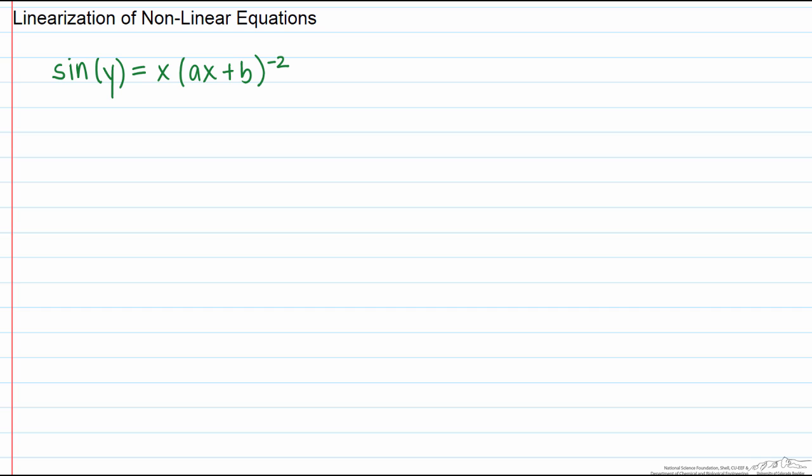Here we want to find a and b. Why? Because if we can determine those parameters we can put them in a form y equals mx plus b where b is the intercept and m is the slope.